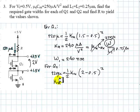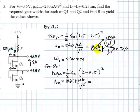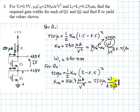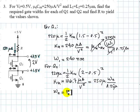Transistor Q2 has to have a KN value of 106.7 microamps per volt squared. And that has to equal 250 microamps per volt squared multiplied by W, the width of the channel, divided by the length of the channel, which is the same for this transistor. From there, we obtain the width of the channel for transistor 2, which turns out to be 106.7 nanometers.